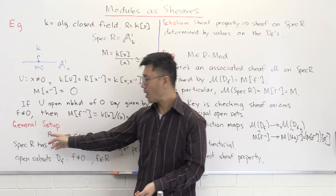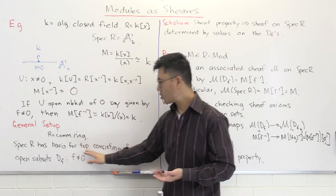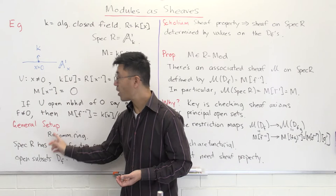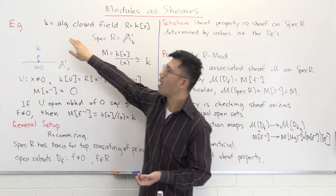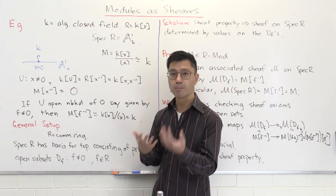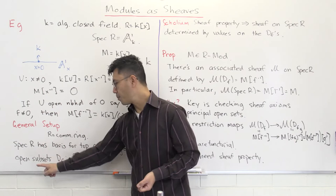Now let's proceed to the general setup. R will be a commutative ring, and we can talk about Spec R. This has a topology; in the scheme-theoretic sense it consists of all prime ideals. But if you're willing to look at the case where R is a finitely generated k-algebra which is a domain, you can think of it as the corresponding variety with its Zariski topology. The key point is that this topology has a basis consisting of principal open subsets.